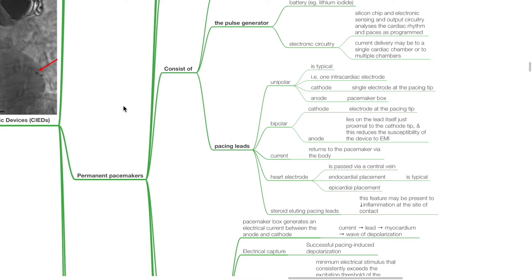For bipolar pacing leads, the cathode is the electrode at the pacing tip and the anode lies on the lead itself just proximal to the cathode tip. This reduces the susceptibility of the device to electromagnetic interference. The current returns to the pacemaker via the body. The heart electrode is passed via a central vein; endocardial placement is typical, though the heart electrode may also be placed epicardially. Steroid-eluting pacing leads are available and may reduce inflammation at the site of contact.